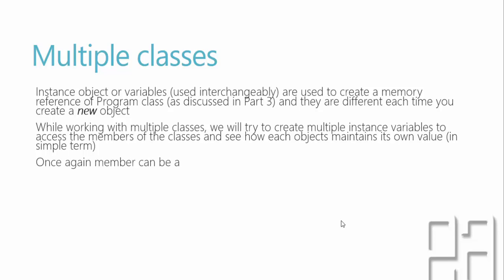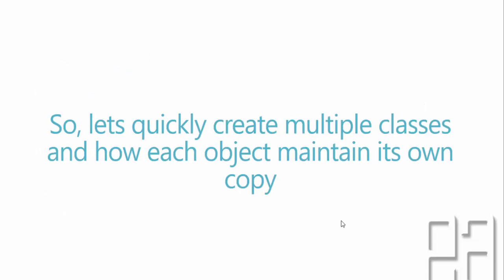We will try to create multiple instance variables to access the members and see how each object maintains its own value. Members, as I said, can be a method, a property, a variable, etc. So let's quickly create multiple classes and see how each object maintains its own copy.